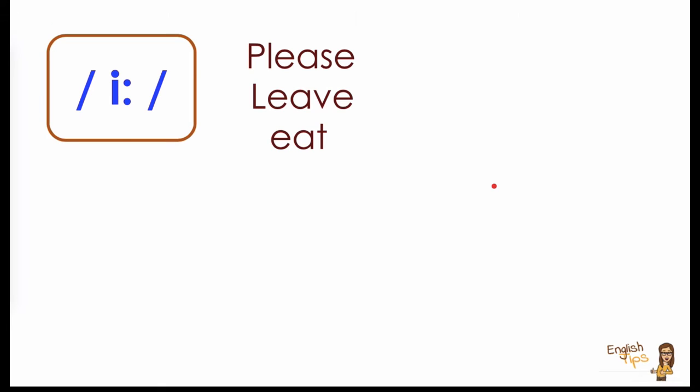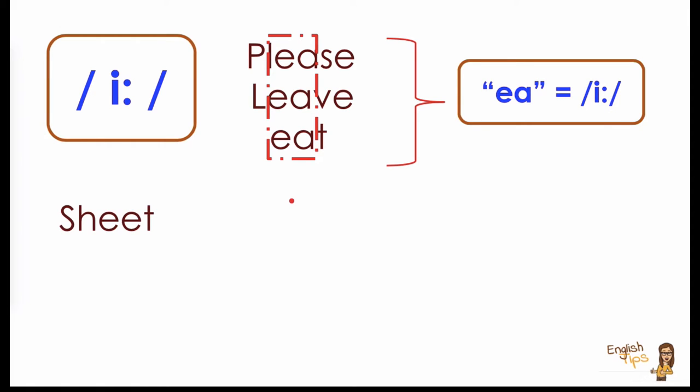So what can we notice in these three words? Is there a pattern in the way they are spelled? Well, of course there is. And as you can see, it's the combination of letters EA, spelled EA but pronounced /i:/, in words like she, need, or speed. And the pattern here is EE.